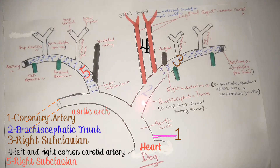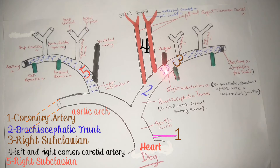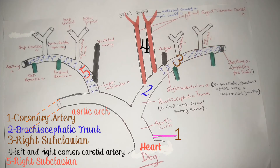The brachiocephalic trunk, as you can see, supplies the head — from the name 'cephalic' — the neck, and the cranial part of the thorax. As the brachiocephalic trunk continues, it gives rise to the right subclavian artery. The continuation of the right subclavian artery then forms the axillary artery, which supplies the forelimbs.